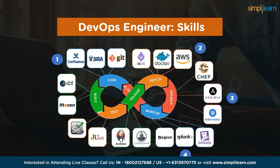Moving ahead, you need a strong grip on monitoring tools. Nagios, Splunk and Datadog are three commonly used tools in the field of monitoring and observability. Nagios specializes in infrastructure and application monitoring, Splunk focuses on log analysis and data visualization, and Datadog provides comprehensive monitoring and analytic capabilities in cloud environments. These tools play a crucial role in maintaining the health and performance of systems and applications.